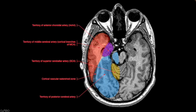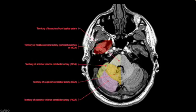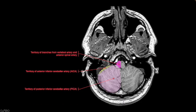This is part of the territory of the superior cerebellar artery. We're not going to talk much about the cerebellum, but there are distinct vascular territories within the cerebellum also that are delineated above here. And these are generally branches off of the vertebrobasilar system.